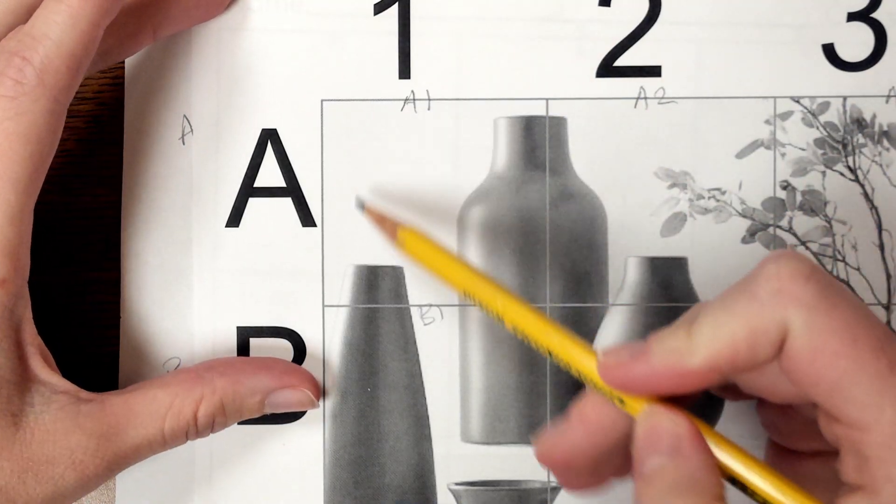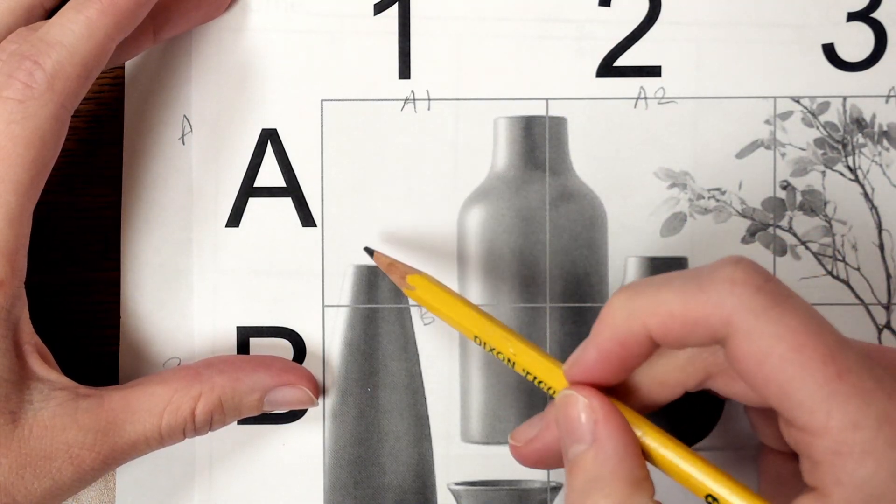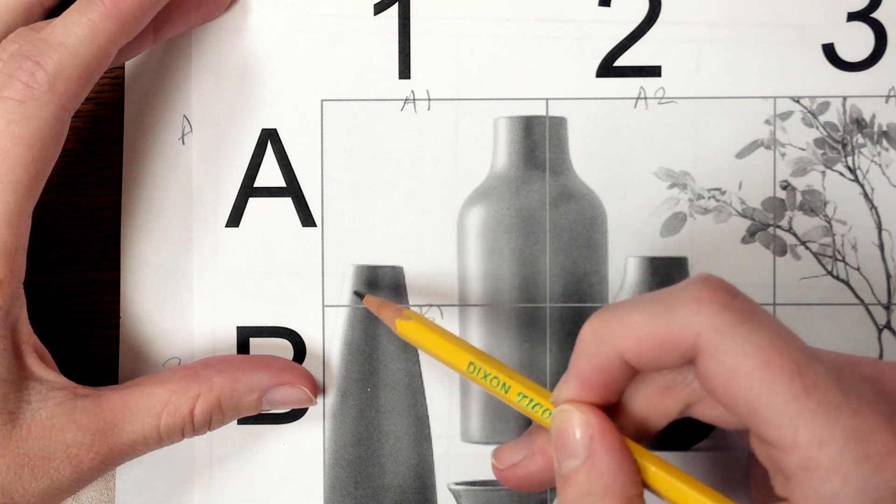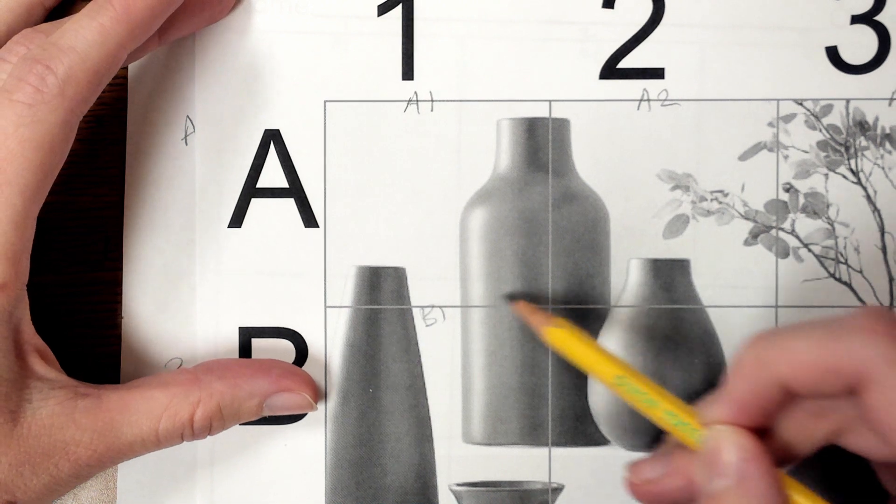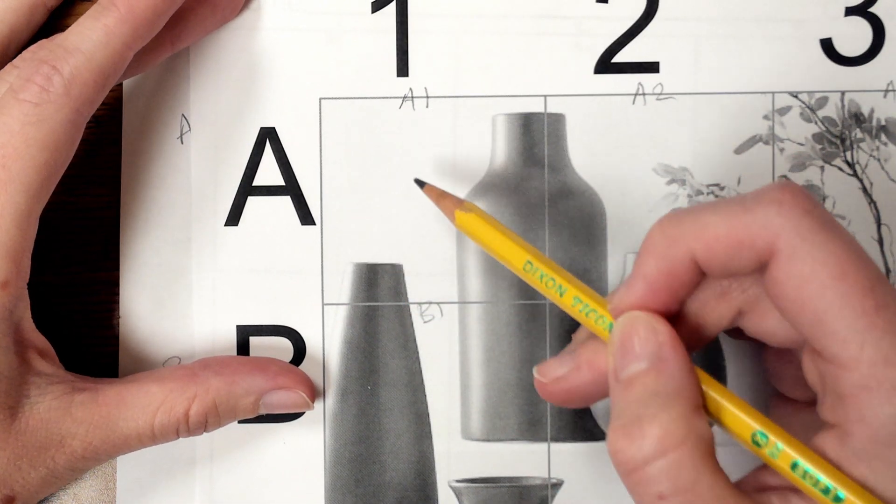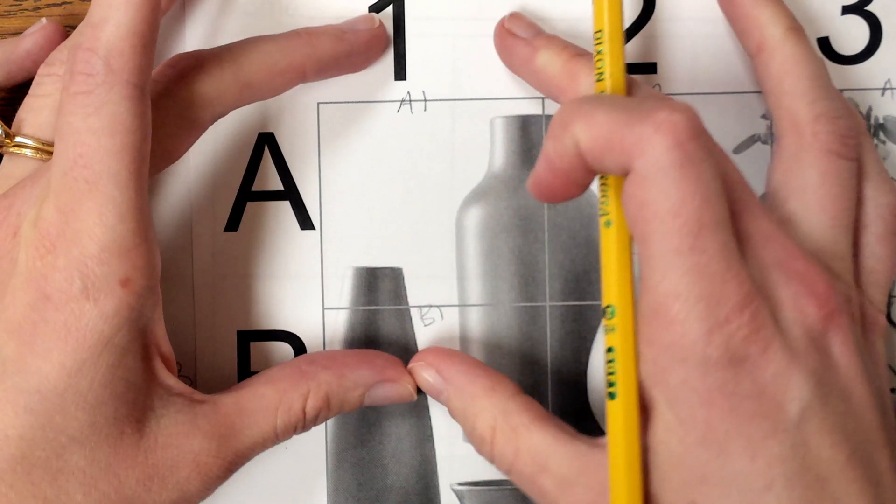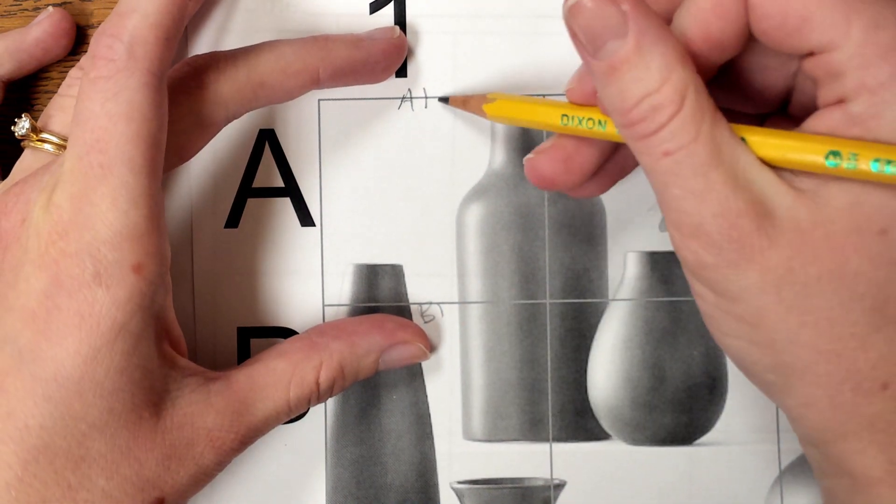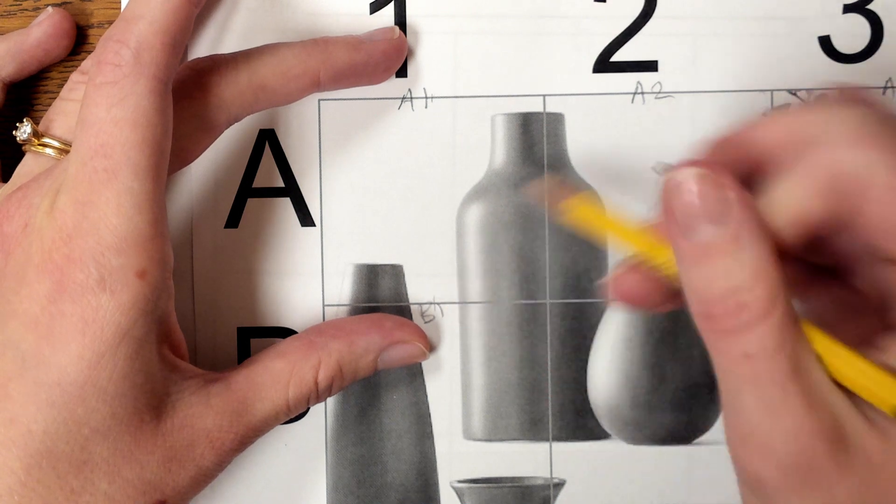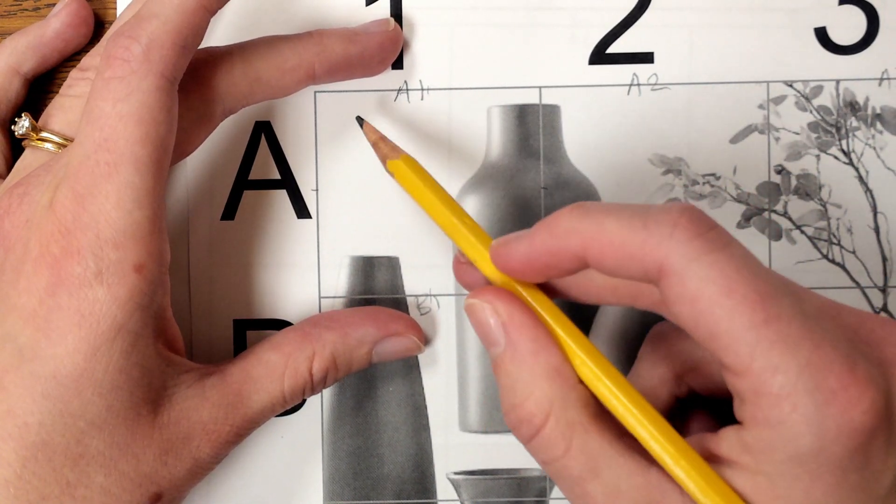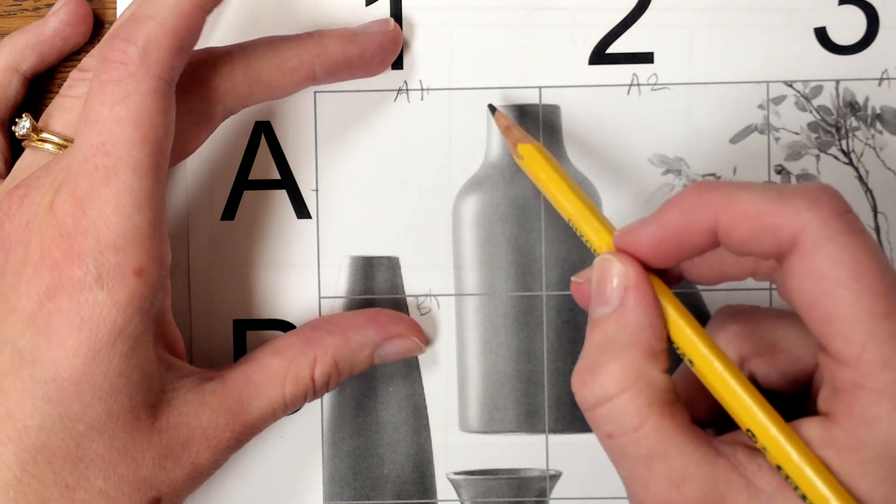For example, in this first grid square up here, I can tell the top of this vase is in the lower left-hand corner, and I can look in my grid, and I could even use fractions to help me estimate where different parts of this picture in this one square are. So if I make a little tally mark about halfway across vertically and horizontally on this grid square, there's nothing in this upper quarter. In this upper quarter, we have the top of this vase.